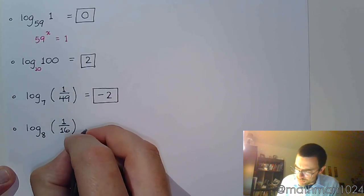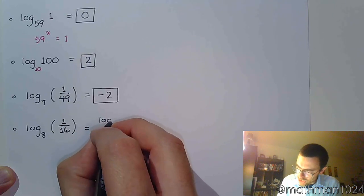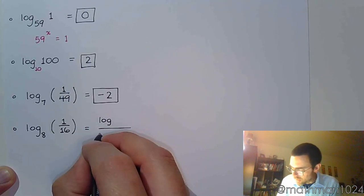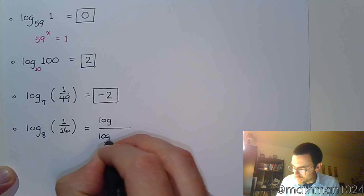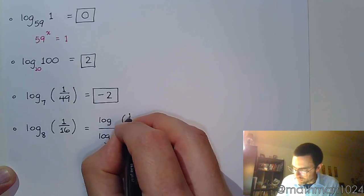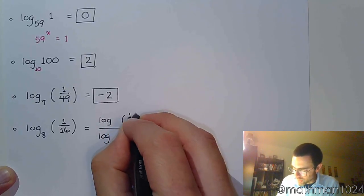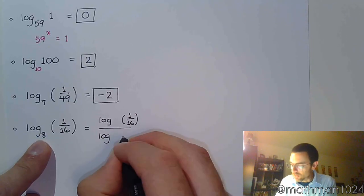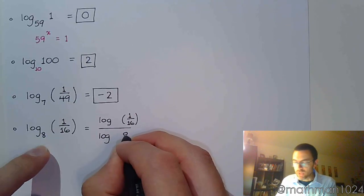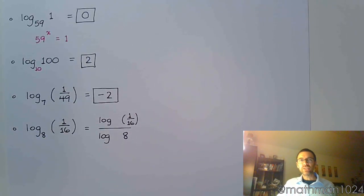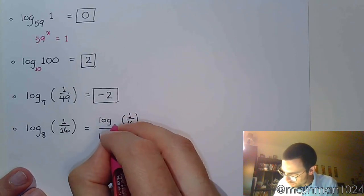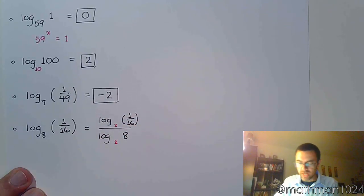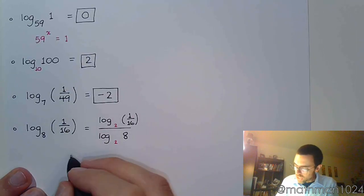If I do a change of base theorem, we have to be able to recognize what the common base is between what's inside the logarithm, which is going to be up here, versus the base, which goes in the denominator like this. So, the common base between the 16 and the 8 is 2. So, we write that in there so we know what base it is that we're working with.